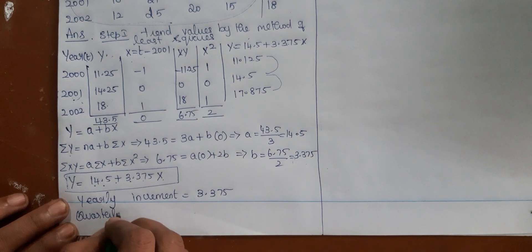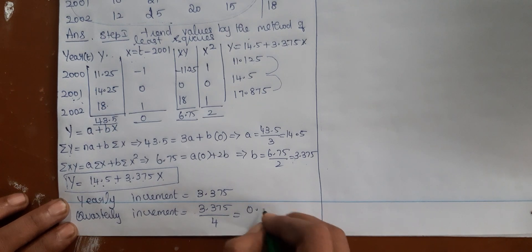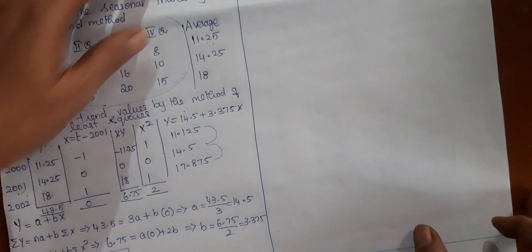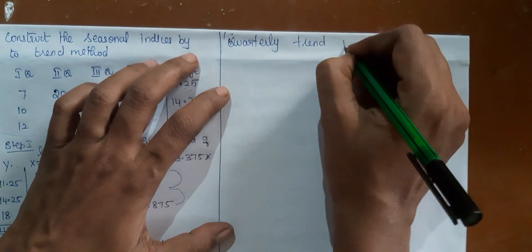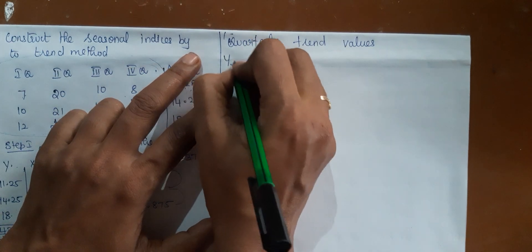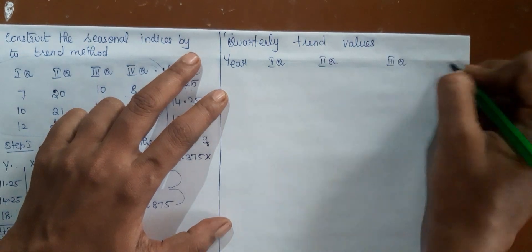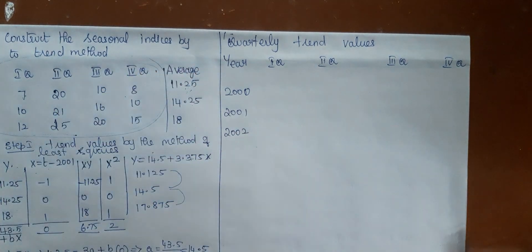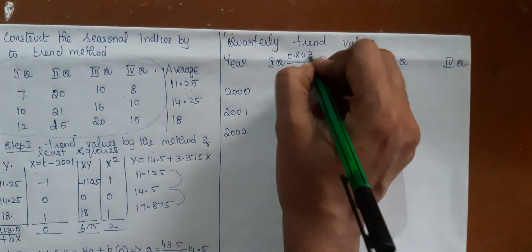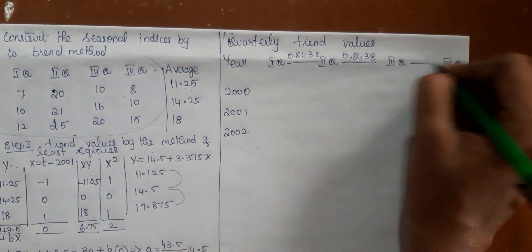The yearly increment is 3.375. In that case, what is the quarterly increment? Divide the yearly increment by 4 and you get the quarterly increment, which is 0.8438. With this understanding, keep these two pieces of information in mind as you construct the quarterly trend values, because you have only quarterly data and so you need quarterly trend values to eliminate the trend.